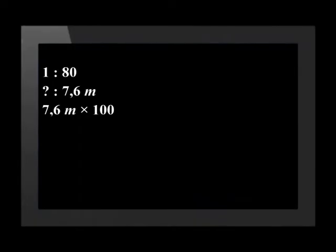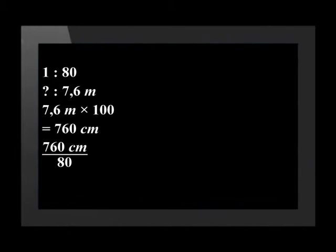Let's write this measurement as centimeters, which will make it easier to draw later. Multiply 7.6 by 100 and this will give us 760 centimeters. The scale tells us that the drawing needs to be 80 times smaller than the real object. We divide 760 by 80, which gives us 9.5 centimeters. This means that when we draw the fence, we should make it 9.5 centimeters long.